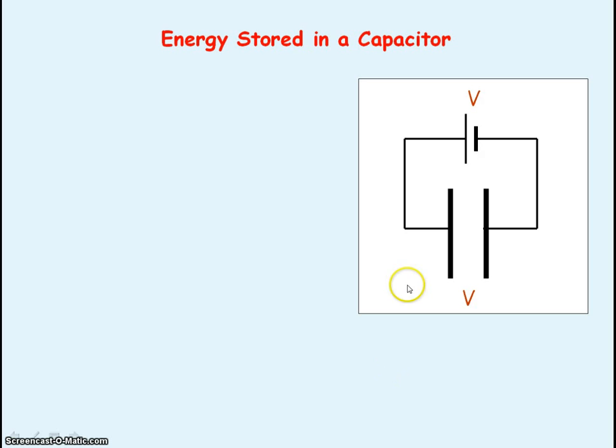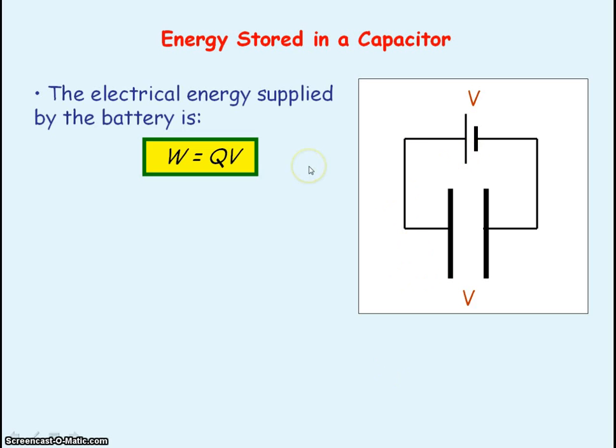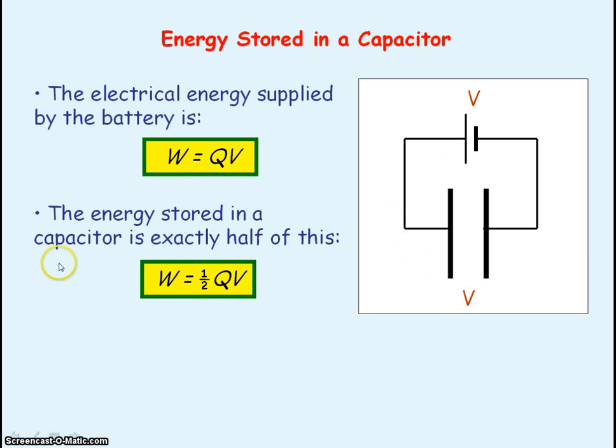So the capacitor stores energy when it's being charged from a battery. The energy supplied by the battery is given by QV, the total charge flowing from the battery times the voltage, potential difference across the battery. And we know the energy stored in the capacitor is exactly half of this value. So what's happened to the other half of this energy supplied?